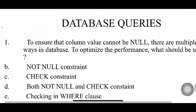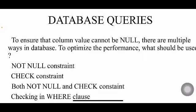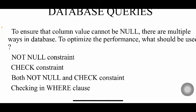The next is database queries. To ensure that the column value cannot be null, there are multiple ways in database. Among the multiple ways, what should be used to optimize the performance? The options are: by using a not null constraint, by using check constraint, by using both not null and check, or by checking with the where clause. Which of these will be an optimized query?